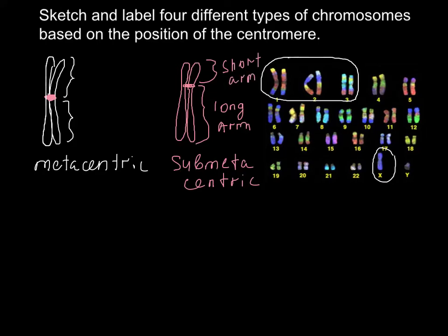This is the second type. We can see this in, for example, chromosome number 6 — and all of that row probably belongs to this type — as well as chromosome numbers 4 and 5.